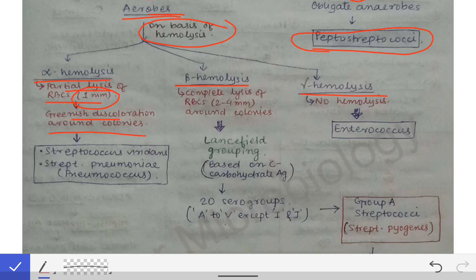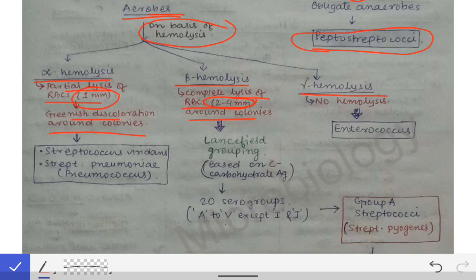For beta hemolysis on a blood agar, there is complete lysis of the RBCs and the zone of hemolysis will be around 2 to 4 mm surrounding the colonies, which is more than in alpha hemolysis. There will be a pale zone surrounding the colonies indicating that complete hemolysis has occurred, hence it is beta hemolysis. Gamma hemolysis means there will be no hemolysis surrounding the colonies.